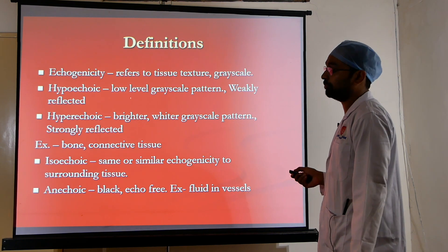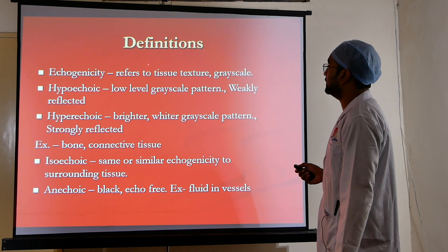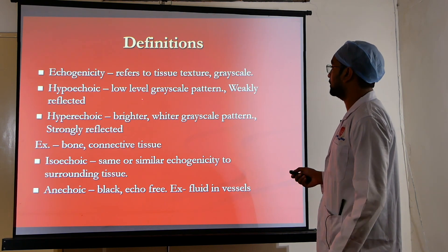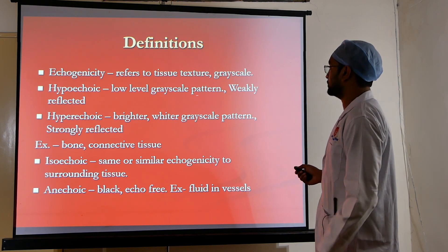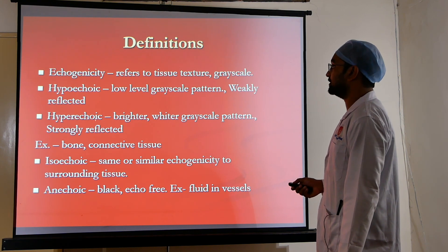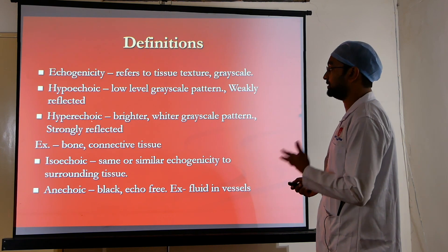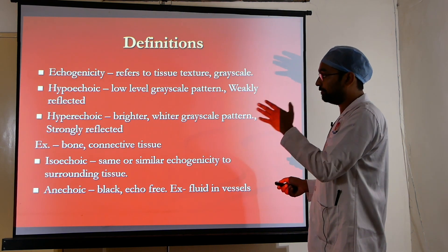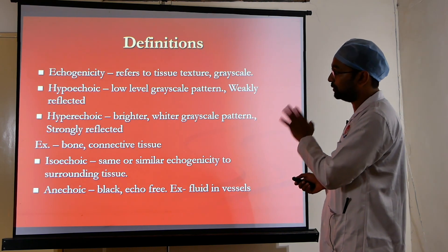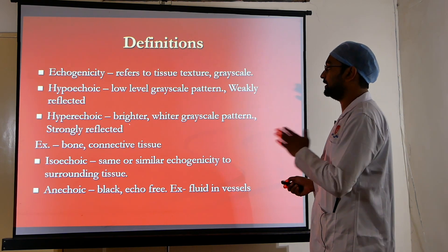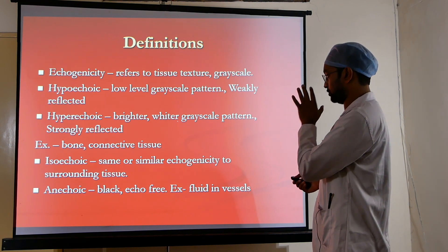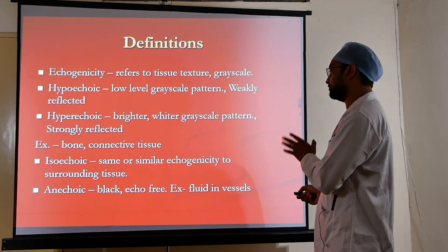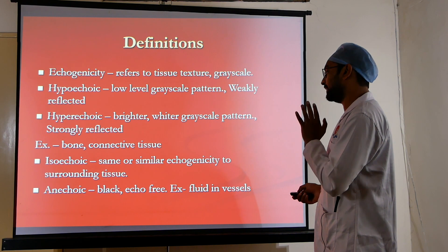Key ultrasound terminology: echogenicity refers to the tissue texture in gray scale. A tissue can be hypoechoic — appearing as a low level gray scale pattern, weakly reflected — or hyperechoic, appearing brighter and whiter on the gray scale with strongly reflected waves. Hyperechoic structures such as bone and connective tissue appear very bright and white. Hypoechoic structures include muscles. Isoechoic means similar echogenicity to surrounding tissue. Anechoic means completely black and echo-free, such as fluid in vessels.